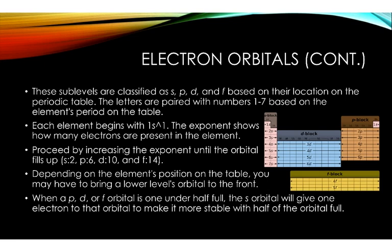Depending on the element's position on the table, you may have to bring a lower level's orbital to the front. Meaning, instead of going from 4s to 4p, I would have to first bring out the 3d orbitals because it takes less energy to fill those up than the 4p.